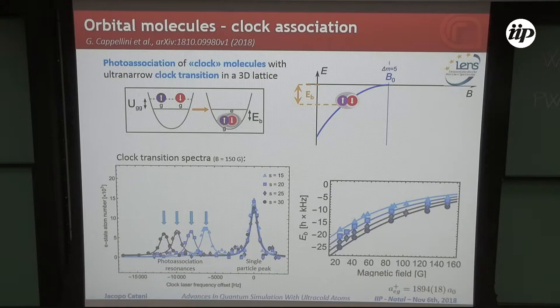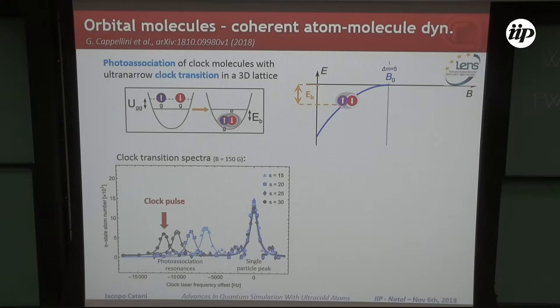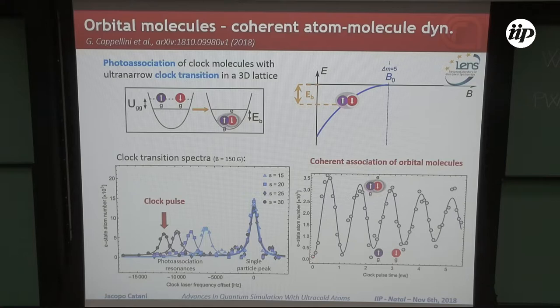Now something fun. We try to keep the laser in resonance and shine a clock pulse. This is what's happening. We were able to observe a coherent oscillation between bound and unbound pairs, which lasts for several oscillation cycles. This besides being interesting by itself, it's also useful for us because it allows us to make a pi pulse with a clock laser in order to associate the molecular sample.